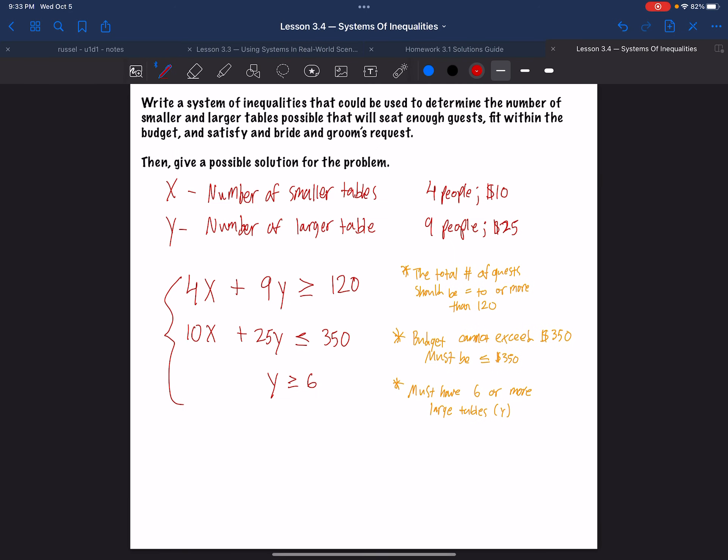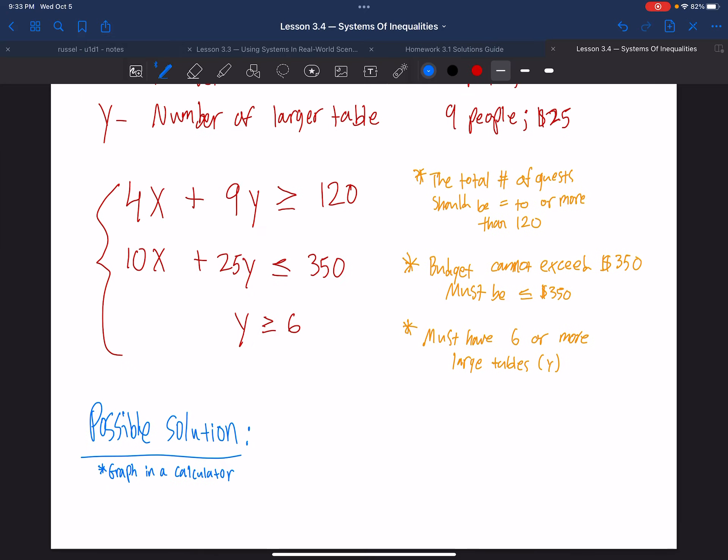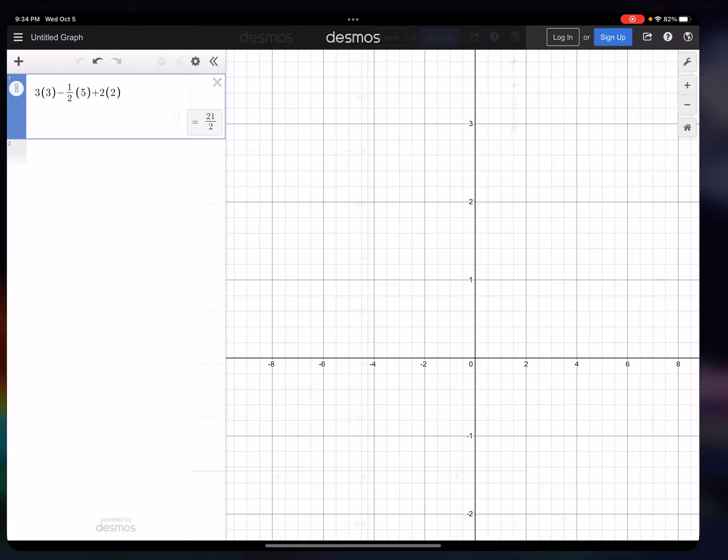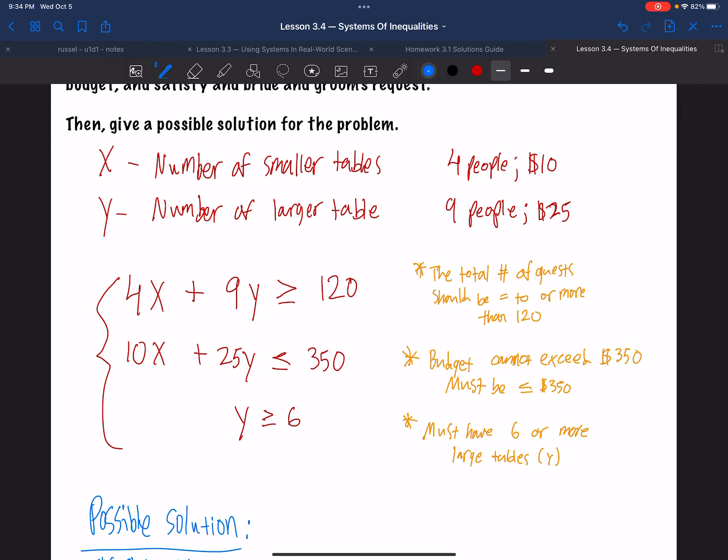So I'll do this in blue. Possible solution. Now, how do I do this? Graph these in a calculator. That's what I even put this. Graph in a calculator. Now you could do it by hand. You could, I mean, you could sketch this by hand and that would be fine. But since the numbers are kind of big, 120, 350, and the slopes are all a little bit goofy, I'm not going to bother putting this in slope intercept form. I'm just gonna graph it and that's fine. So let's do that. Let's go over to Desmos.